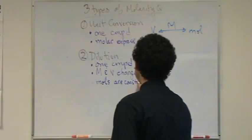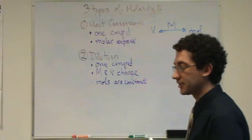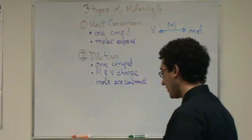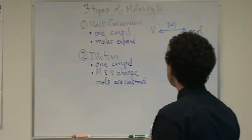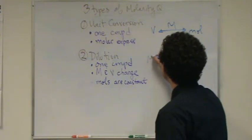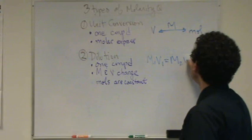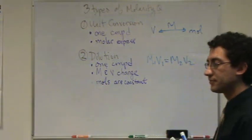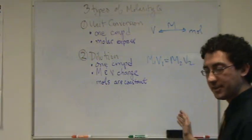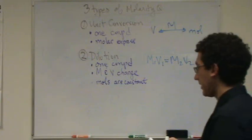Whenever you dilute something, you're not changing the moles. Okay, how does this one work? It's your standard equation I gave you earlier. M1 V1 equals M2 V2. There's plug and chug for that one.